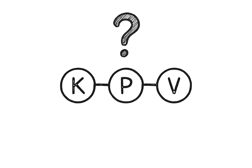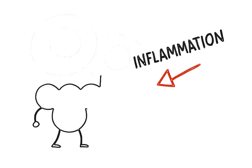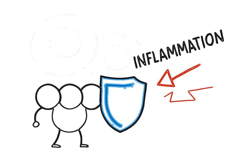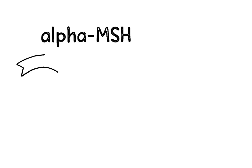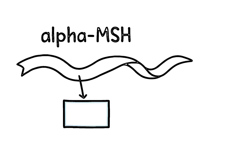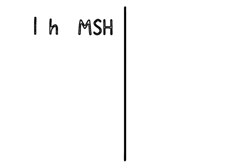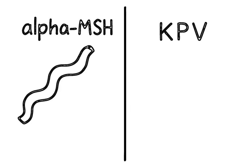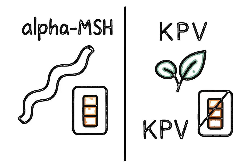So what exactly is KPV? Imagine a short chain of just three amino acids. Even though it's small, it works like a dedicated bodyguard for your cells, helping to reduce inflammation and protect your tissues. It actually comes from a larger hormone called alpha MSH, which helps control inflammation in the body. The brilliant part is that KPV keeps all of that anti-inflammatory power, but without the side effect of affecting skin color.